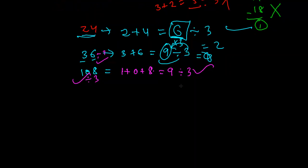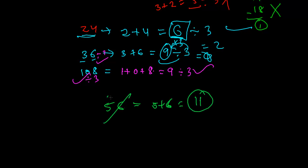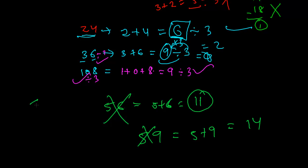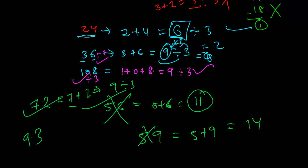Let's do a few more examples. For 56: add 5 plus 6 to get 11. Since 11 is not a multiple of 3, 56 is not divisible by 3. For 59: 5 plus 9 equals 14, and since 14 is not divisible by 3, 59 is also not divisible by 3. For 72: 7 plus 2 equals 9, and since 9 is divisible by 3, 72 is also divisible by 3. For 93: 9 plus 3 equals 12, and since 12 is divisible by 3, 93 is also divisible by 3.